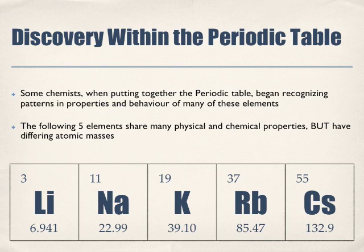Look at the Periodic Table. I've arranged it differently here than it is on the Periodic Table. Which group? The alkali metals. So they all share similar physical and chemical properties, but notice the different atomic mass as listed here at the bottom. You can refer to your Periodic Table to complete your table.